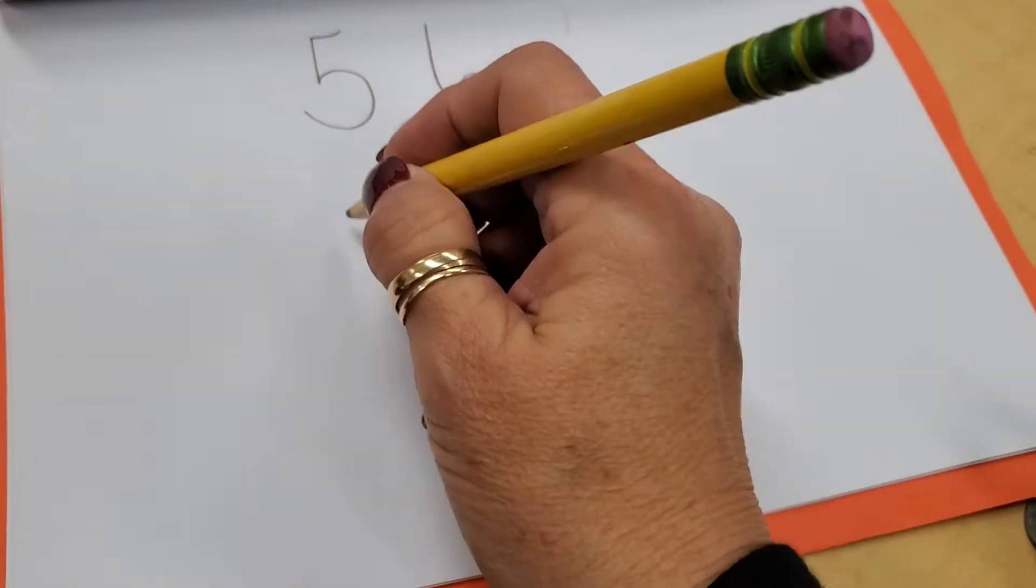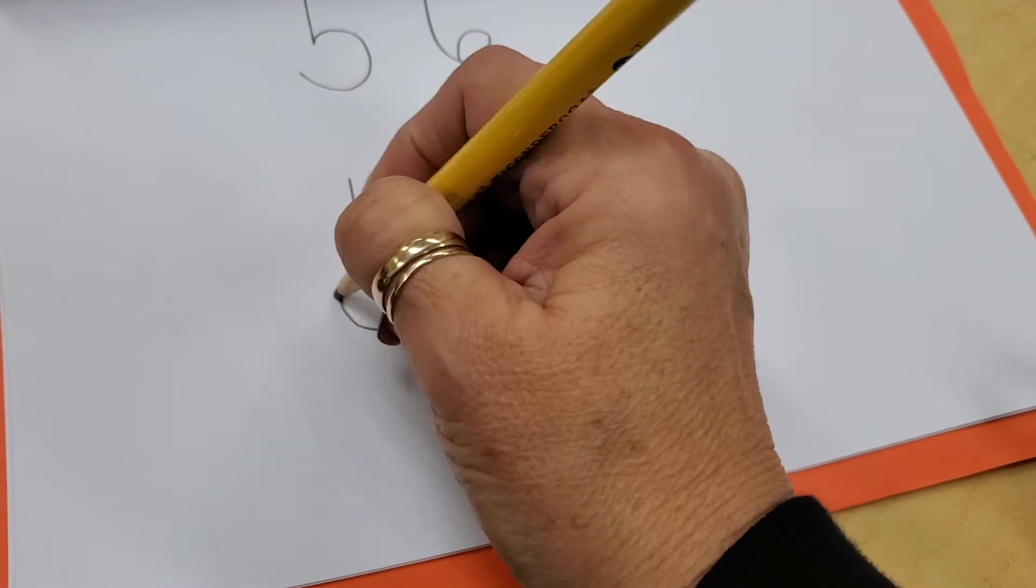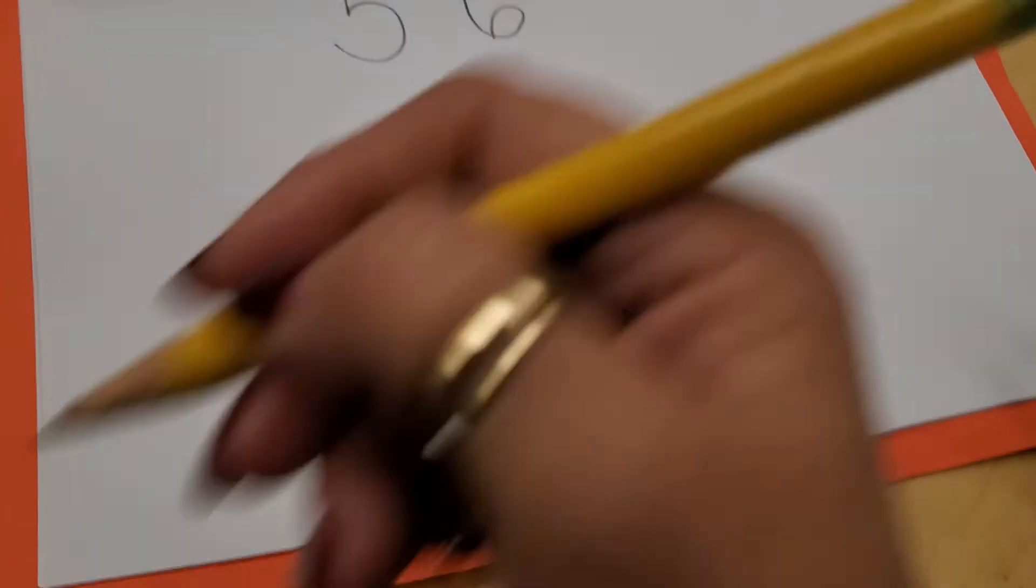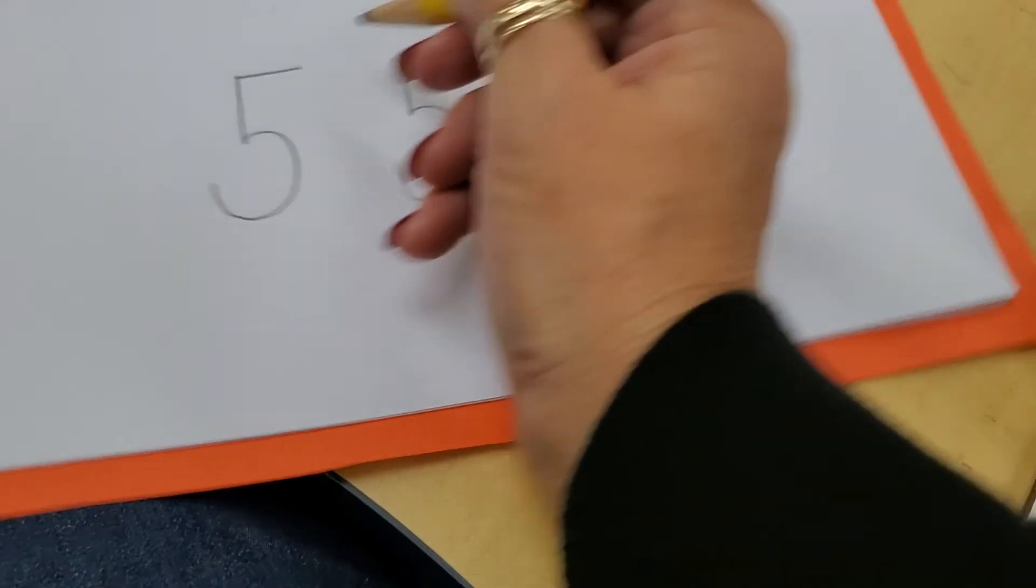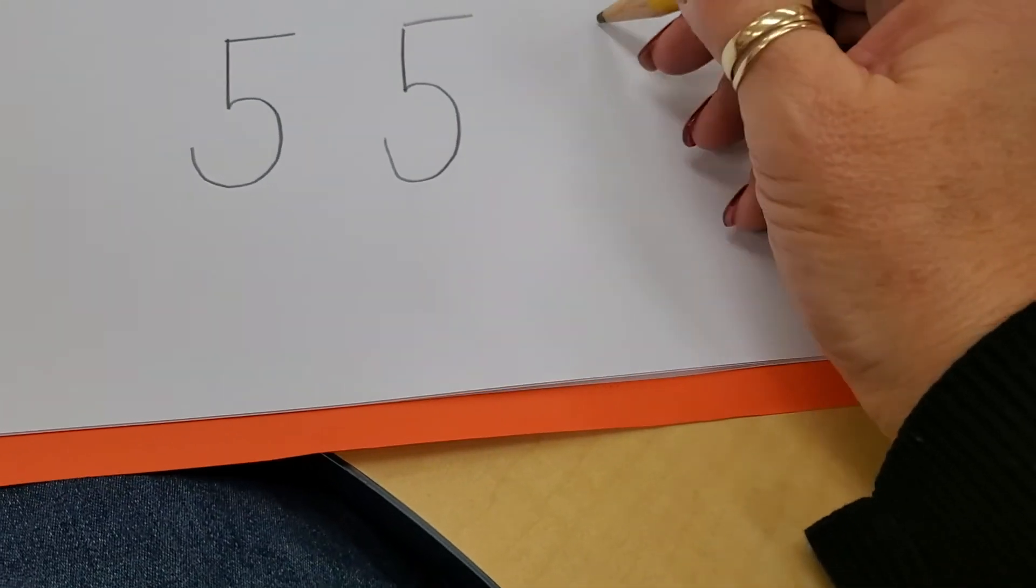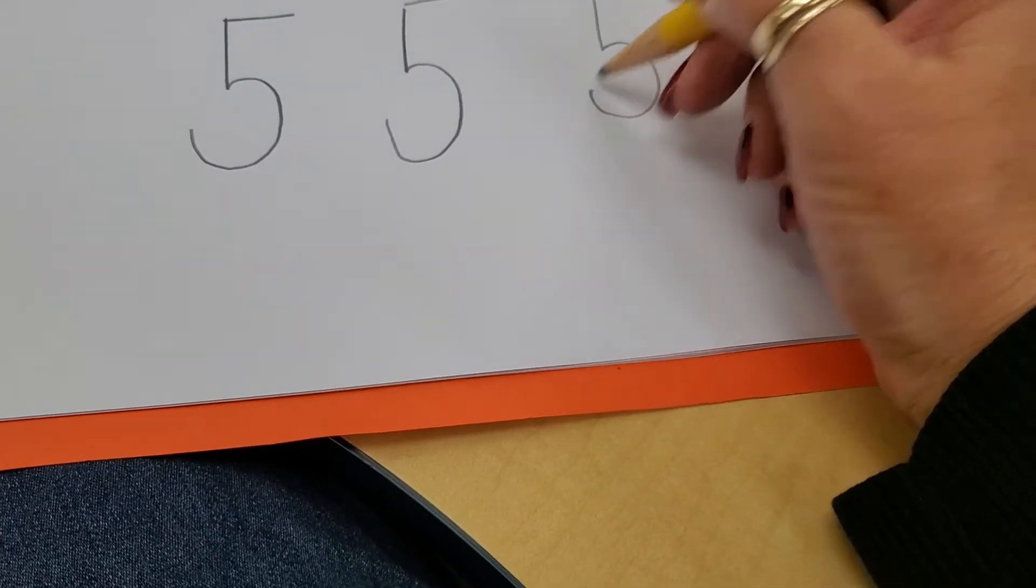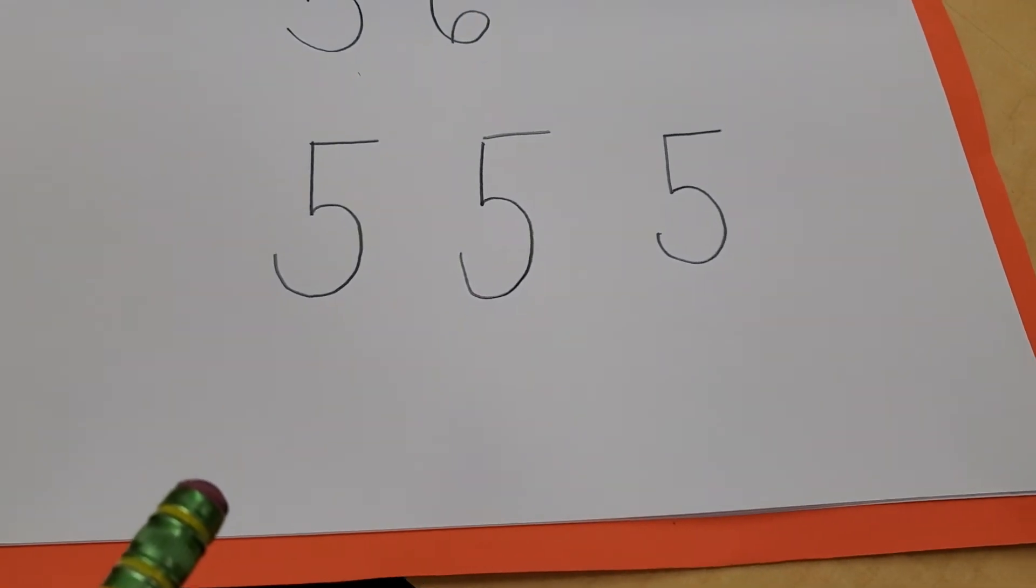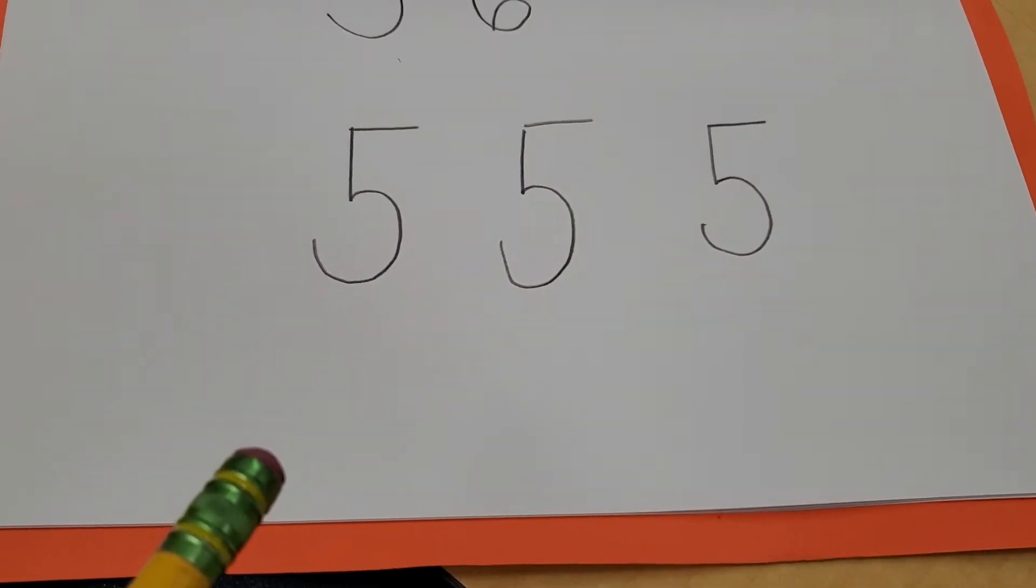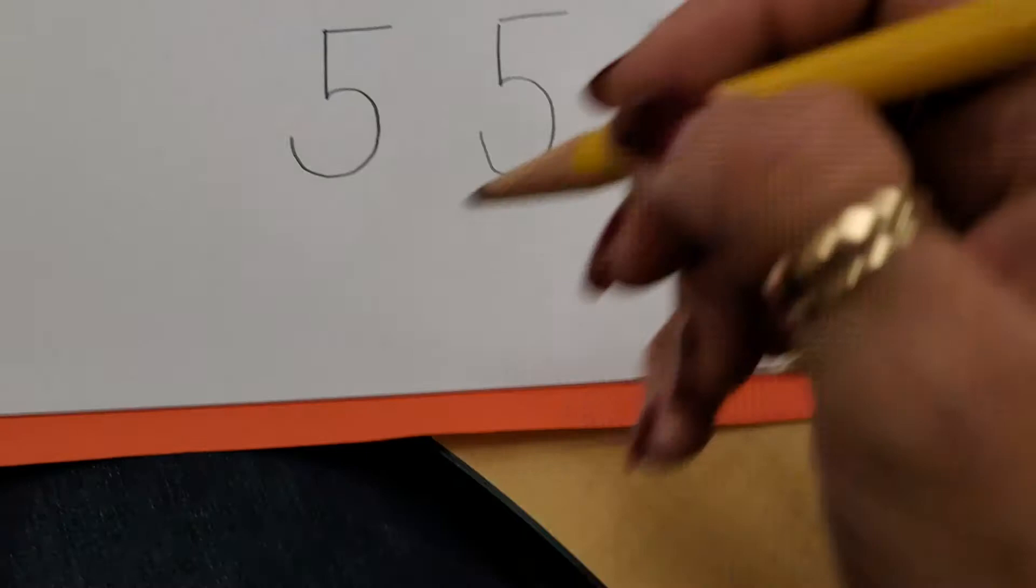Okay, so we're going down and around, and then we're going to put a top on it for the five. Down and around, and put a top on it. Keep on practicing, boys and girls. Down, around, talk to yourself if you need to, and put a top on it. That's your number five. That's how old some of you will be. Down, around, and put a top on it.